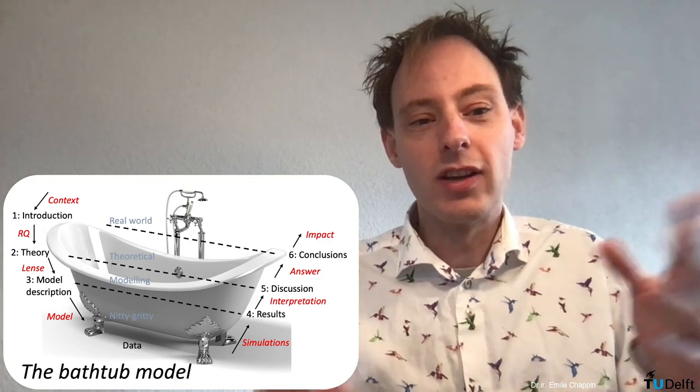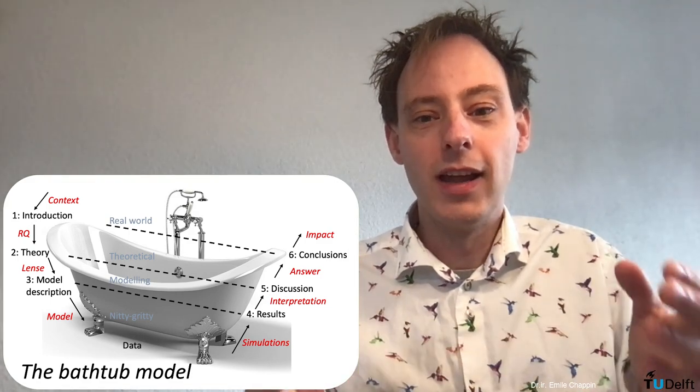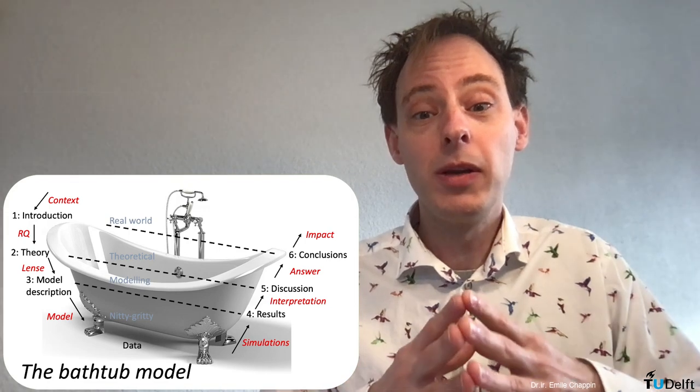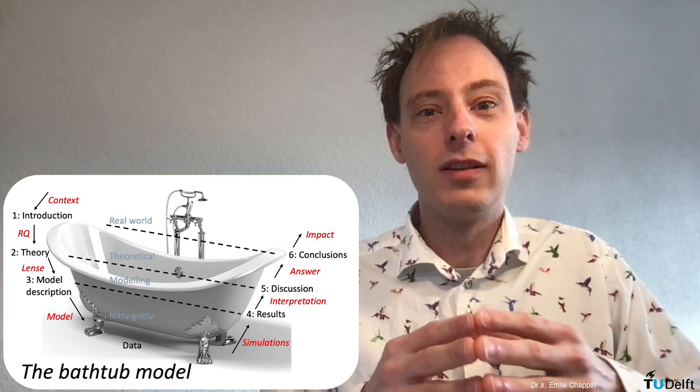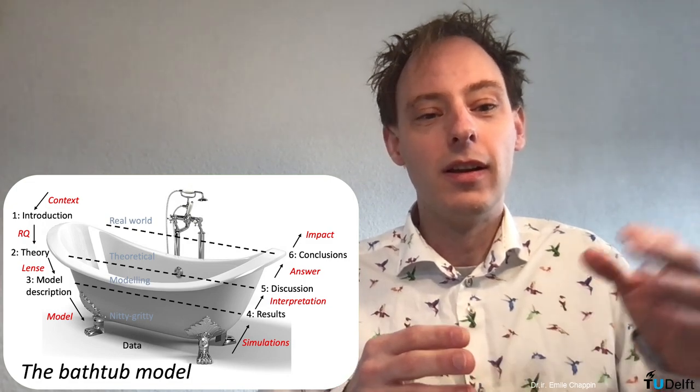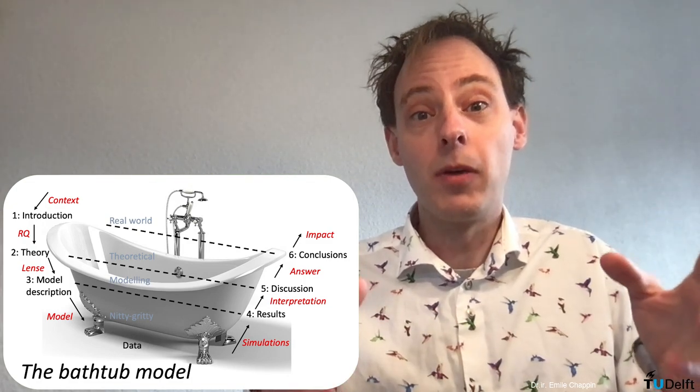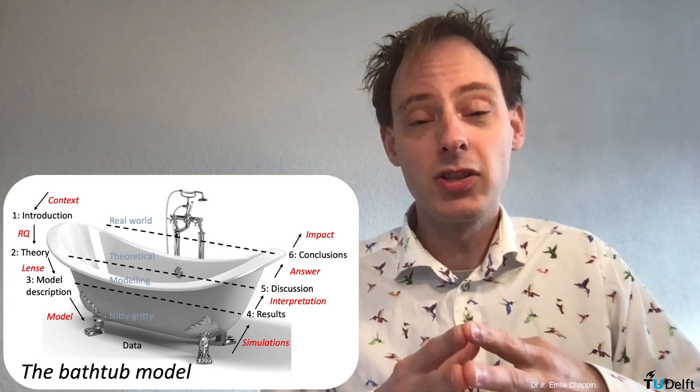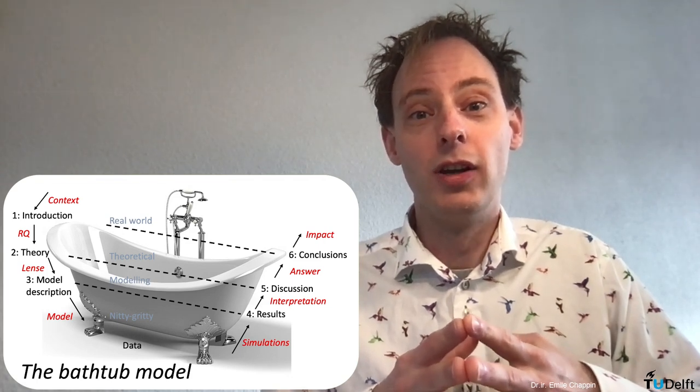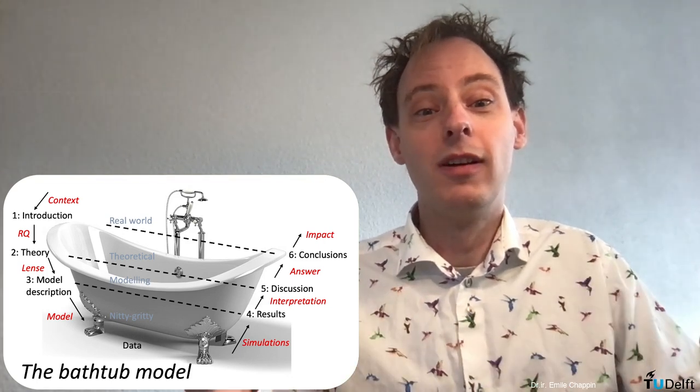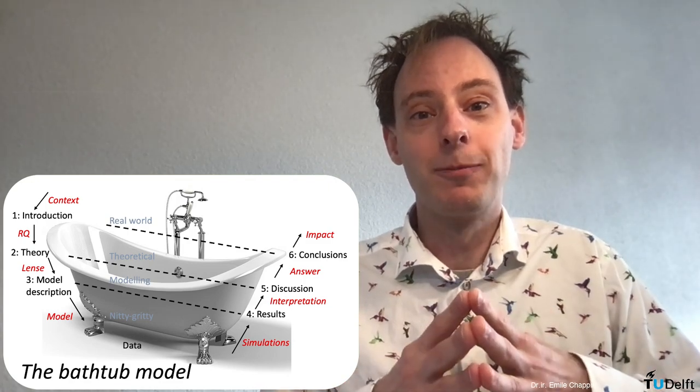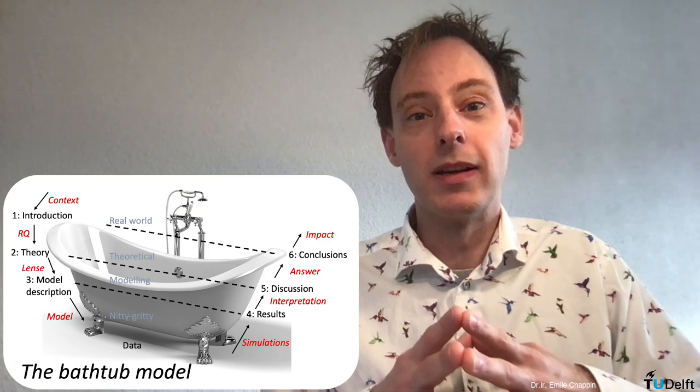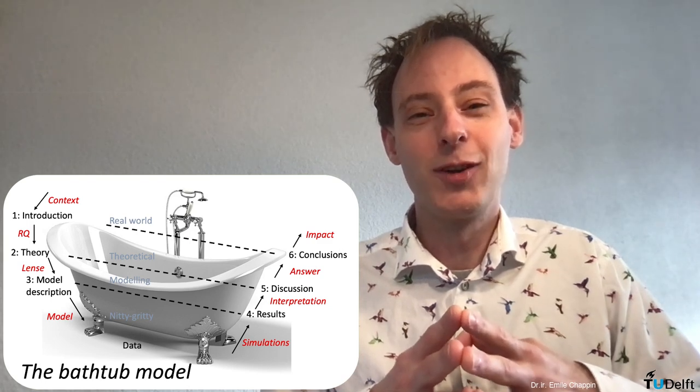So I hope this helps you to structure your or related papers and modeling studies. This is only an example. I know that labels sometimes mean different things to different people, and that different structures are possible. But I would argue that for any modeling study, a bathtub model like this might be sketched. And I hope that it helps you to get a clear view on the structure of a modeling paper, and have a systematic discussion about it. Good luck!